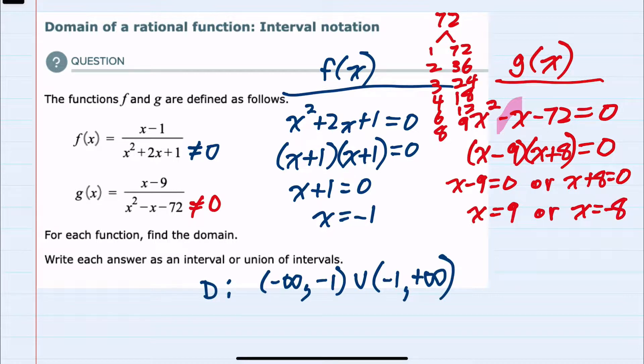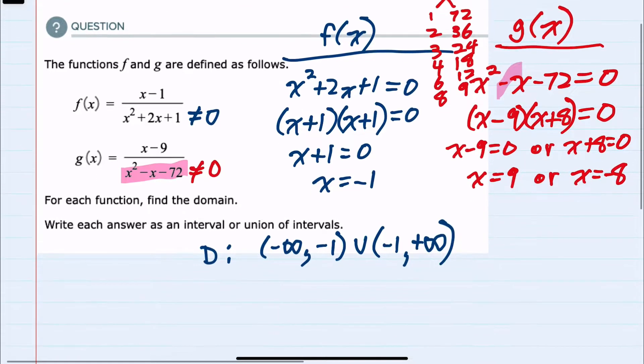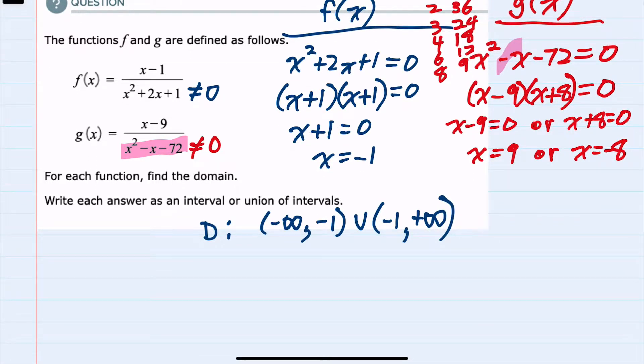And so either a 9 or a negative 8 would give me a zero in the denominator here for g of x. So I need to exclude both of those values. So similar to f of x to find the domain.